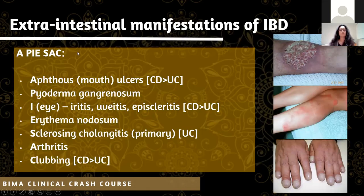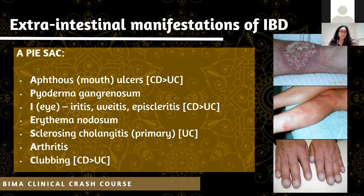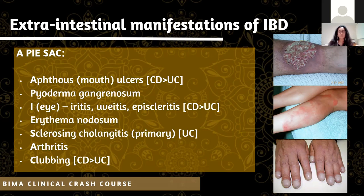IBD has extra-intestinal manifestations - things in completely other parts of the body. You can remember these with the acronym APISAC: mouth ulcers (more common in Crohn's), pyoderma gangrenosum (painful skin lesions), eye involvement such as uveitis (like the red eyes in our SBA), erythema nodosum (a rash that looks like bruising, commonly found on the shins), sclerosing cholangitis, arthritis, and clubbing - with arthritis and clubbing more common in Crohn's.